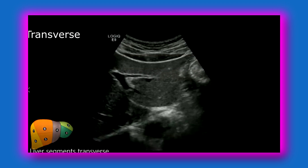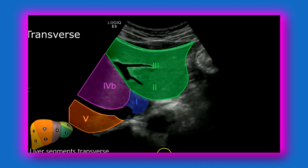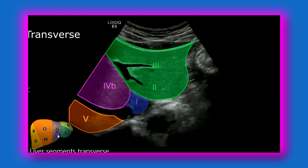Now we're angling from inferior to superior. Here you're going to have the portal vein branch feeding segment 3, the portal vein branch feeding segment 2, the caudate lobe — segment 1 — segment 4B, and segment 5. Closer to the transverse face you're going to see the inferior segments of the liver: 3, 4B, and as you go more posteriorly you'll start getting 2 and 5, as well as the caudate lobe, which is behind here.